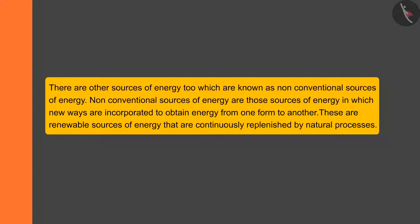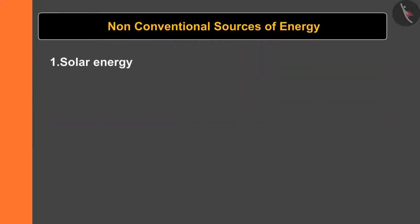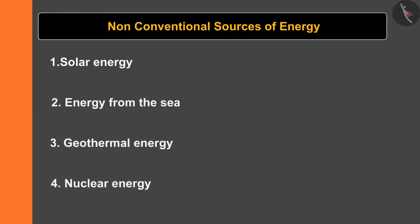These are renewable sources of energy that are continuously replenished by natural processes. They are majorly of four types: solar energy, energy from the sea, geothermal energy, and nuclear energy. Let's understand each source one by one.